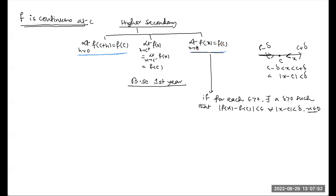When x is close to c — mod of x minus c less than delta, which is very small — then looking at f(x) versus f(c): what is f(x) minus f(c)? It is less than epsilon. If you look at f(x) and f(c), and then x and c, this is the analysis at BSc level.